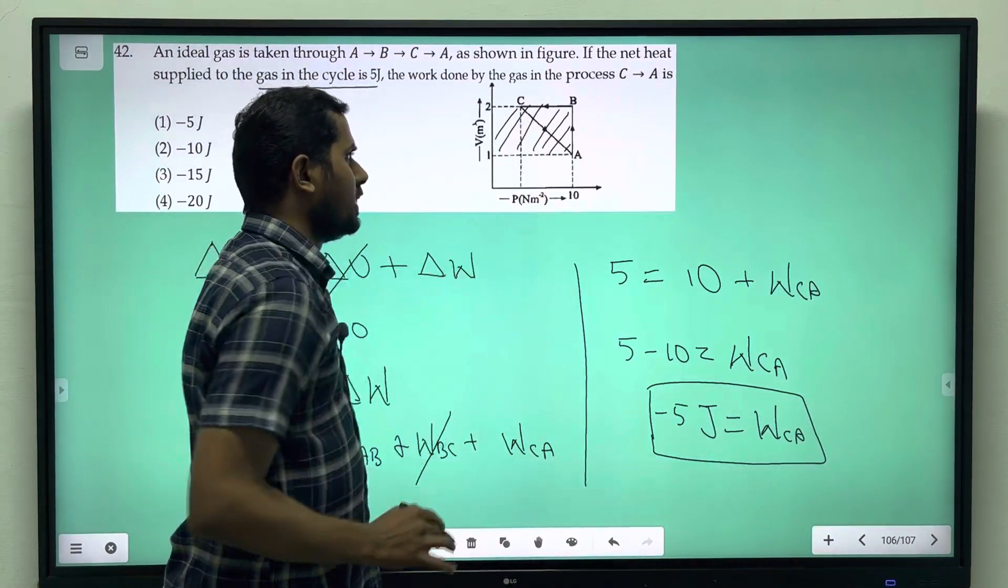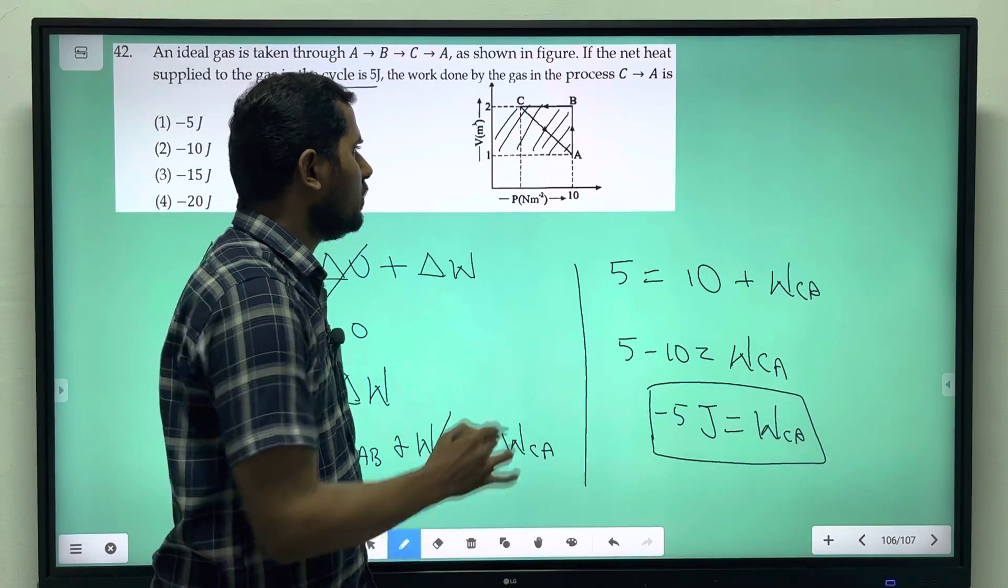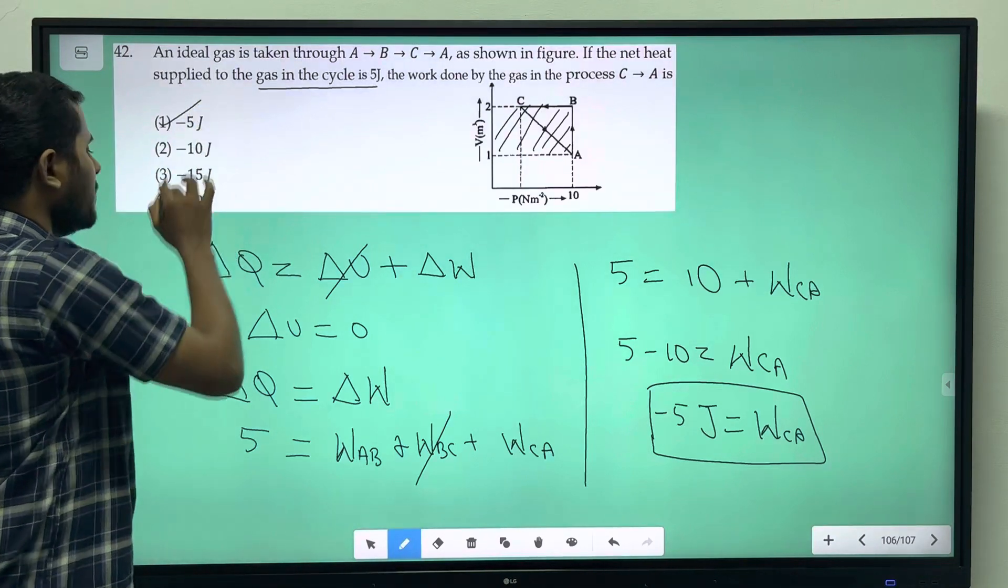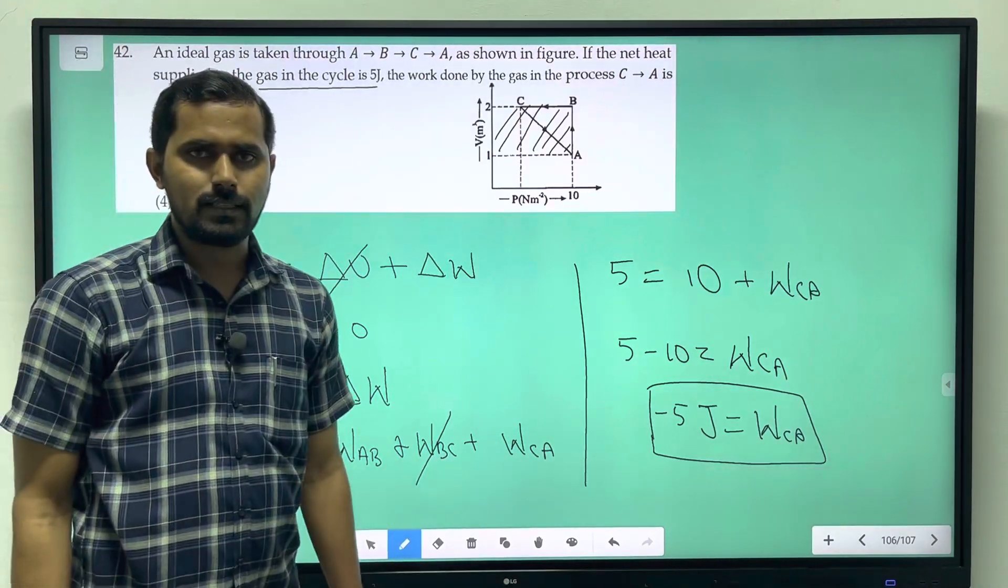For cycle C-A, we have found the work done. So, the answer is minus 5 joule is the correct answer. Thank you.